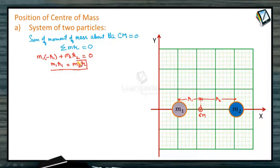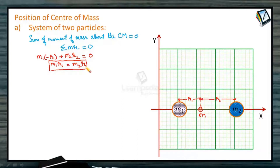This is a very important conclusion. The sum of moment of mass about the center of mass should be equal to zero — meaning M·R summed is zero. So if M1 is heavier, R1 will be less, because M1·R1 must equal M2·R2. If M2 is lighter, R2 will be greater. M1·R1 always equals M2·R2 for a two-particle system, because the sum of moment of mass about the center of mass is zero.